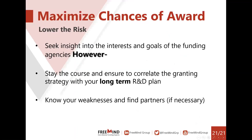In terms of maximizing your chances of award: first, seek the insight and interests of the funding agencies — not only by reading the solicitation, but also by contacting the program officers and research contacts listed at the end of each solicitation. Get their feedback on your project directly. In terms of granting strategy, align it with your long-term R&D plan, not the opposite. Don't change the way you are doing things based on a solicitation you like — instead, build your long-term R&D and commercialization plan, then include a granting strategy aligned with your long-term goals.